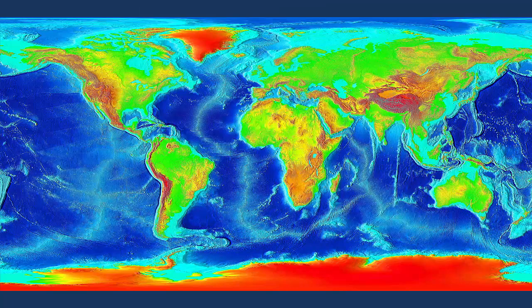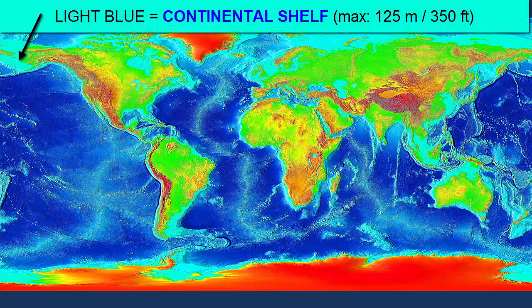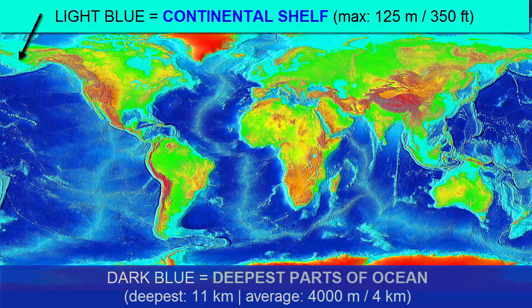Now let's review the depths and heights of oceans and land. In this image, the light blue color represents the shallow margins or continental shelves of the continents and ocean islands, never deeper than 125 meters or about 350 feet. The darker blue represents the deeper parts of the ocean — the deep abyssal plains, trenches, and mid-ocean ridges.